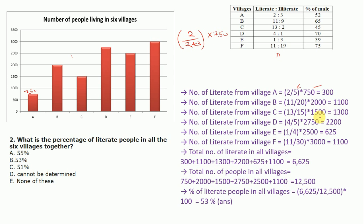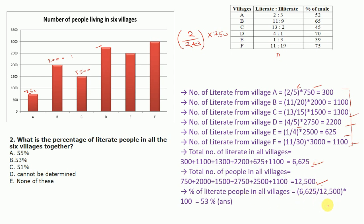Illiterate from village C = (13/15) × 1500 = 1300. Illiterate from village D = (4/5) × 2750 = 2200. Similarly we calculate for villages E and F. Total illiterate across all villages = 300 + 1100 + 1300 + 2200 + 625 + 1100 = 6625. Total pupils in all 6 villages = 750 + 2000 + 1500 + 2750 + ... = 12500. Percentage of illiterate pupils = (6625/12500) × 100 ≈ 53%. So option B is correct.